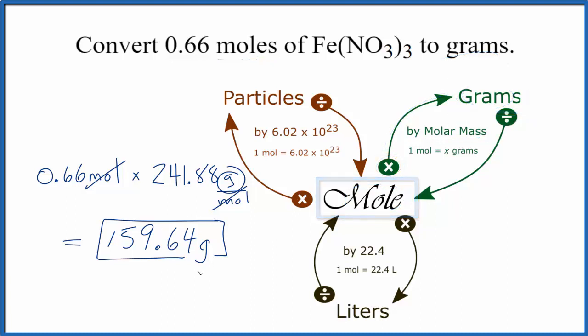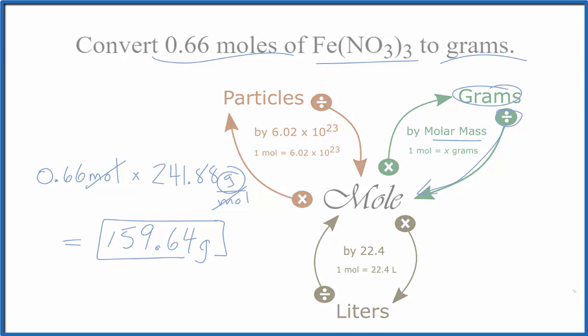If we were given grams of iron(III) nitrate and asked to find moles, we would do the reverse. We start out with grams, we divide by the molar mass, and that gives us the moles. This is Dr. B converting 0.66 moles of Fe(NO3)3, iron(III) nitrate, to grams. Thanks for watching.